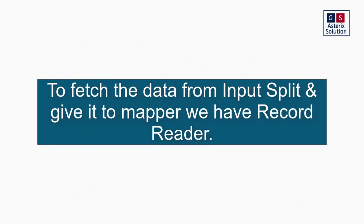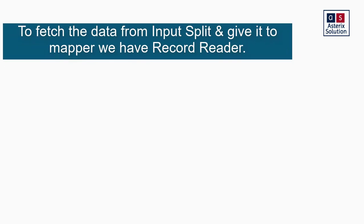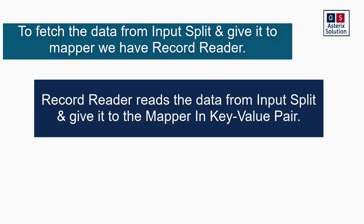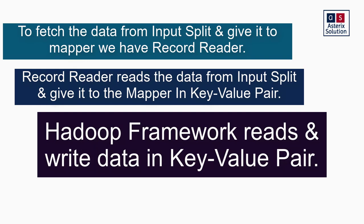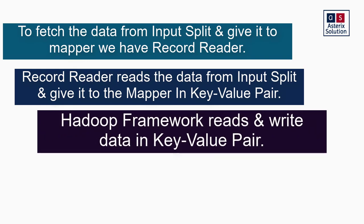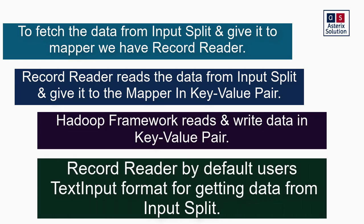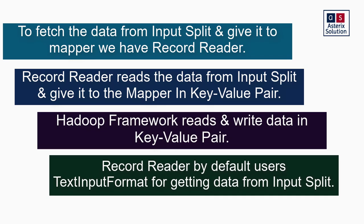For those three mappers, you need someone in between who will read the data. That component is called a record reader. The record reader reads the data from your input split and gives it to your mapper in a key-value format. Always remember: Hadoop will always run in a format called key-value pairs — from input split to record reader, record reader to mapper, mapper to reducer.